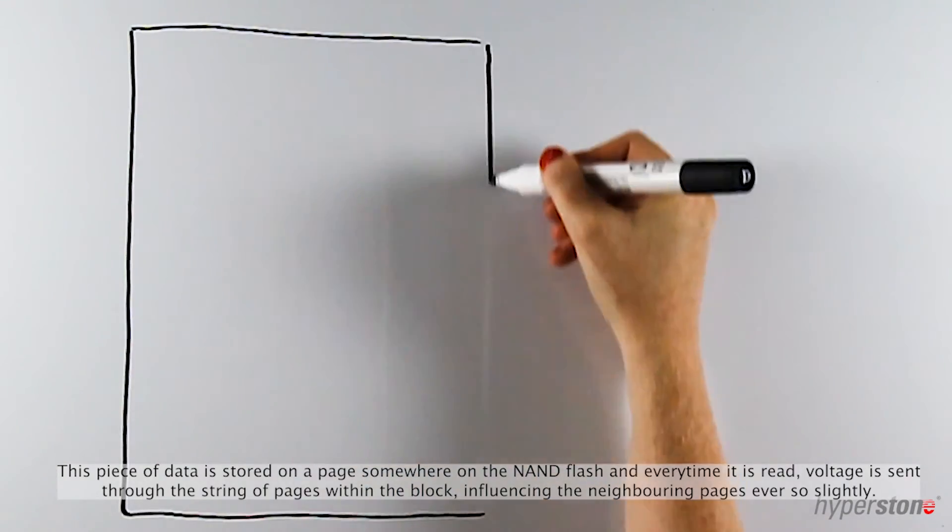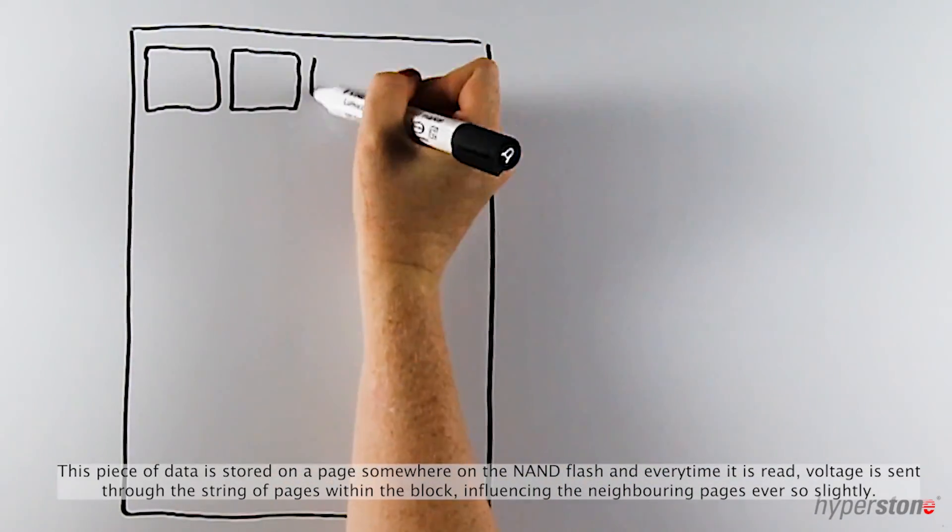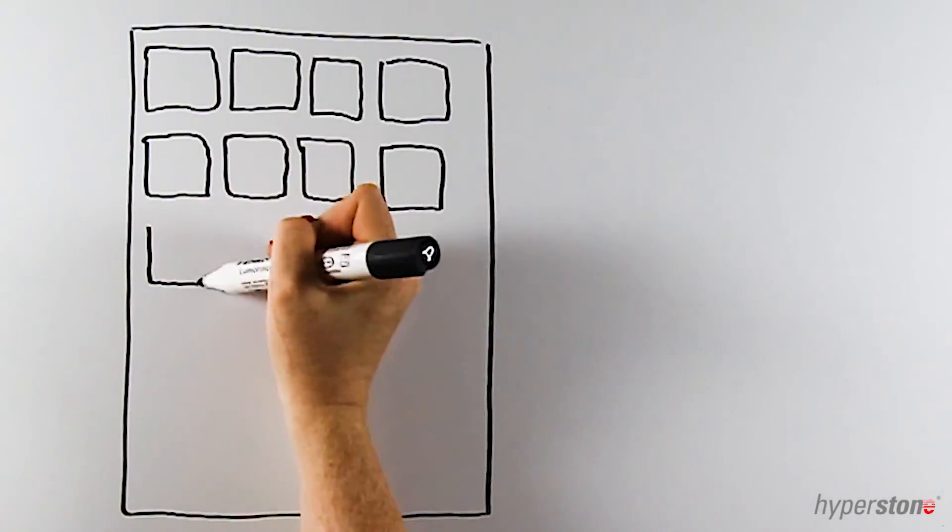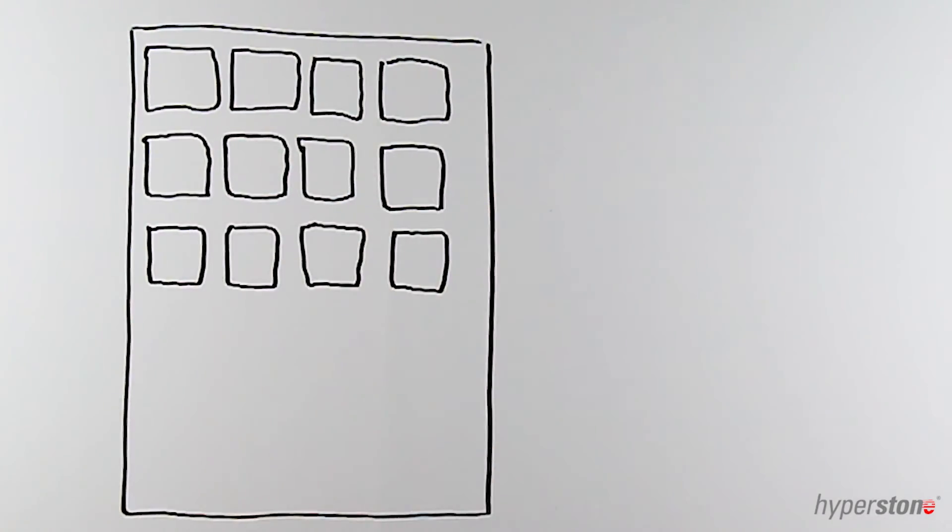This piece of data is stored on a page somewhere on the NAND flash, and every time it is read, voltage is sent through the string of pages within the block, influencing the neighboring pages ever so slightly.